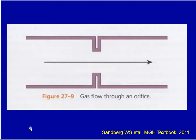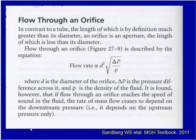Gas resistance is unique when fluids — either a gas or a liquid — flow through an orifice. The flow rate through an orifice is proportional to the diameter squared and the density of the fluid.